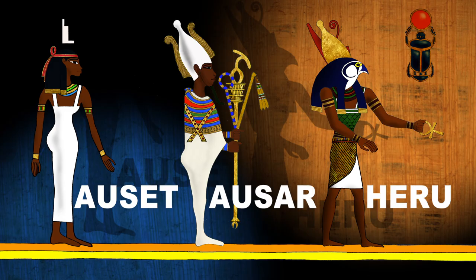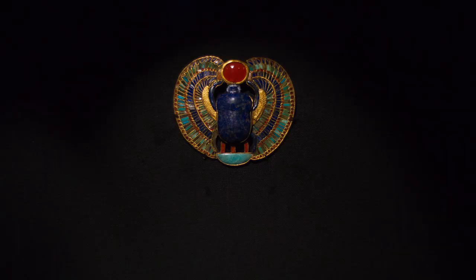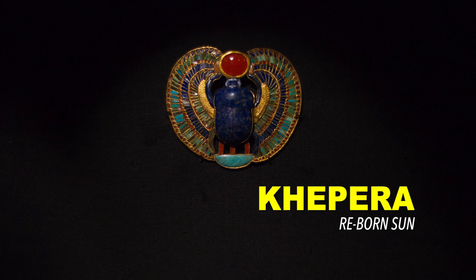Asar and Aset give birth to Heru, who is the resurrection and the light. The Shabaka stone takes us through a dynamic process of coming into being called Keppra, represented by the dung beetle. The dung beetle represents this process of coming into being, and this story leads to an understanding of the science of what we're talking about.